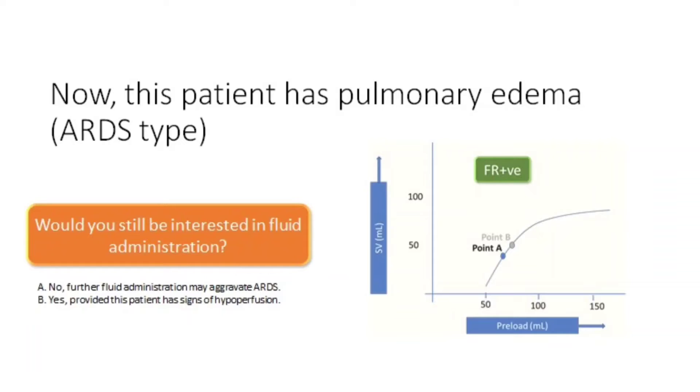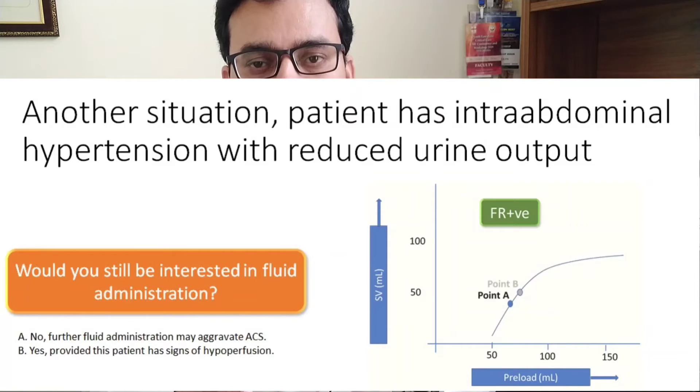There are two answers: No — further administration may aggravate the ARDS; or Yes — provided this patient has signs of hypoperfusion. Another situation: this patient has intra-abdominal hypertension with reduced urine output. Would you still administer fluid? Probably no, because further fluid may aggravate abdominal compartment syndrome; or probably yes, if this patient has signs of hypoperfusion. You must look for signs of hypoperfusion before administering fluid, and be mindful of harmful effects such as ARDS and abdominal compartment syndrome. Need for blood transfusion and oxygenation should also be assessed continuously.